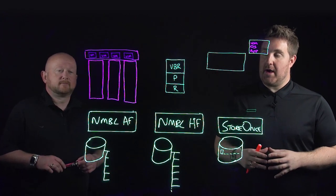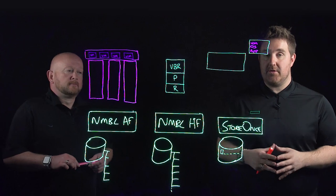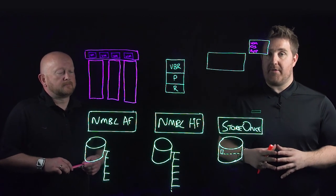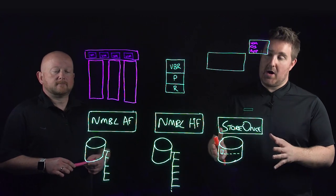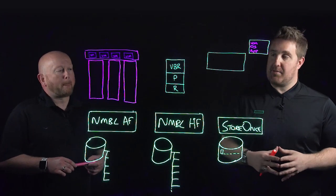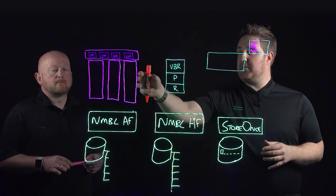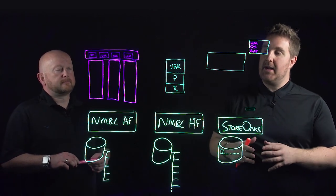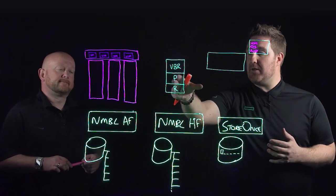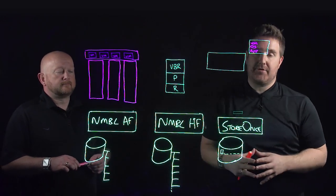On the screen here we've drawn a typical 3-2-1 technology which we described in one of our other videos. Here we have a Nimble All-Flash Array, a Nimble Hybrid Flash Array, and a StoreOnce platform. We've drawn some compute, some VMs with a backup job assigned to it with Veeam Backup and Recovery. We've got some proxies and the repositories are already pre-drawn on the screen.